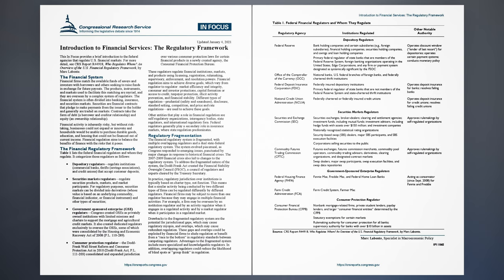Financial regulation aims to balance the benefits of finance with the risks that it poses. Table 1 lists the federal financial regulators and whom they regulate. It categorizes those regulators as follows: depository regulators, which regulate institutions — commercial banks, thrifts, savings associations, and credit unions — that accept customer deposits.